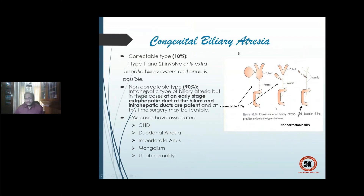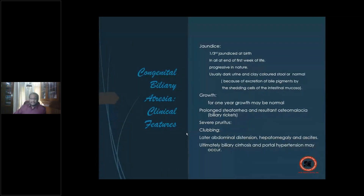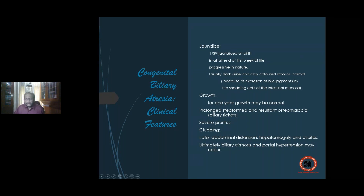The correctable part — where you can do anastomosis easily — is available in only 10 percent of patients. Twenty-five percent of these patients have associated congenital anomalies: congenital heart disease, duodenal atresia, imperforate anus, mongolism, or urinary tract abnormalities. Typical presentation: one-third have jaundice at birth, and 100 percent have jaundice by the end of the first week.